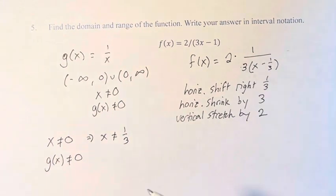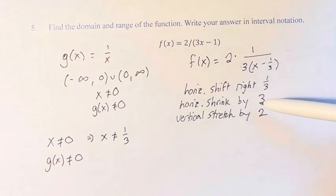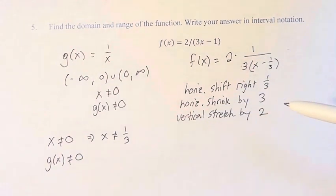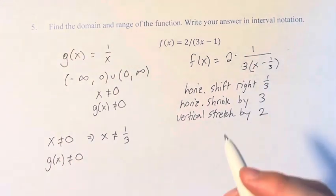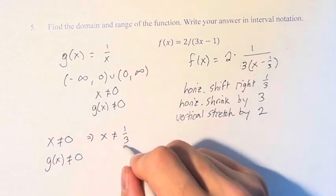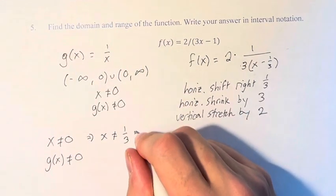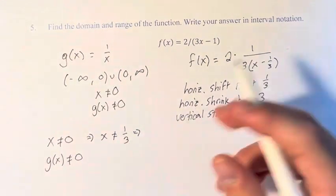Then we horizontally shrink by a factor of 3. Therefore, we have that x is not equal to this shrunk by a factor of 3. x is 1 ninth.